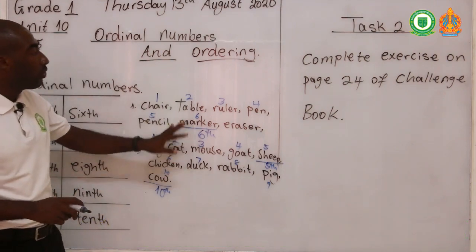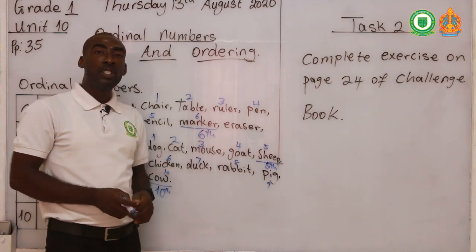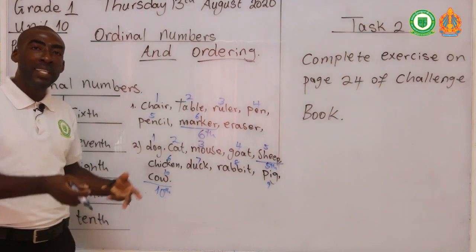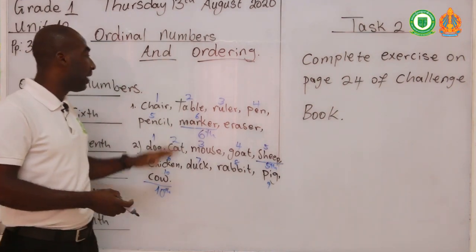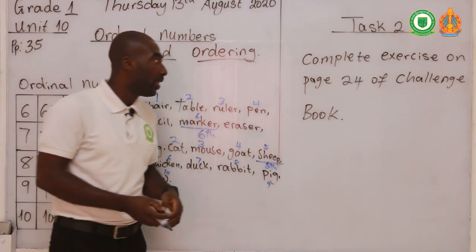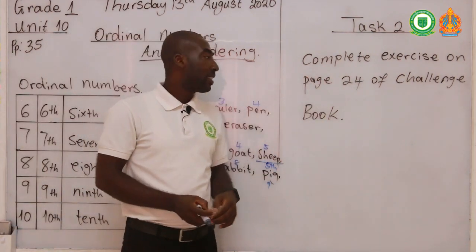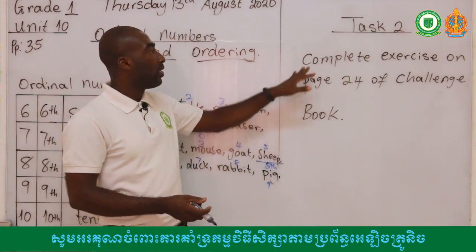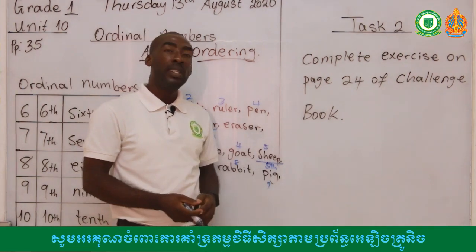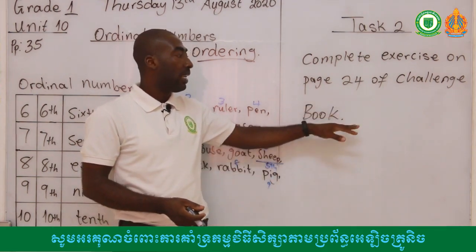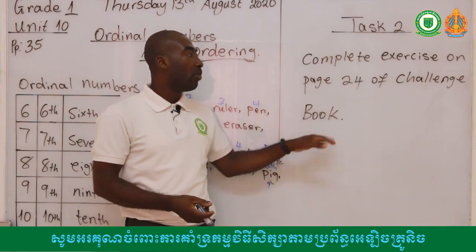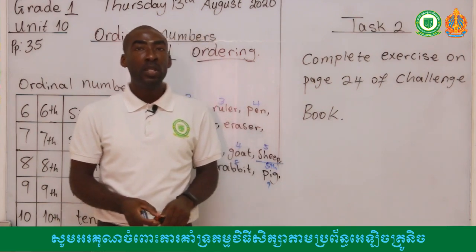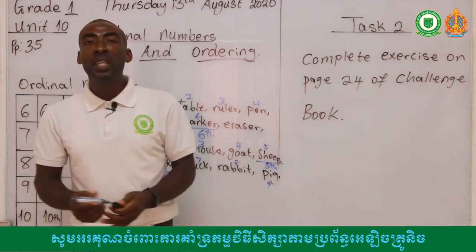This is how you can easily identify ordinal numbers for any arrangement or ordering of items. It's easy and you have to get it. We will have our second task on ordinal numbers and ordering. You are supposed to complete the exercise on page 24 of the challenge book before we move to the third video. I will wait for your exercise to be ready, then we go to the third video. See you in our last video.